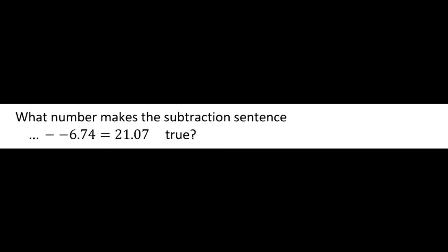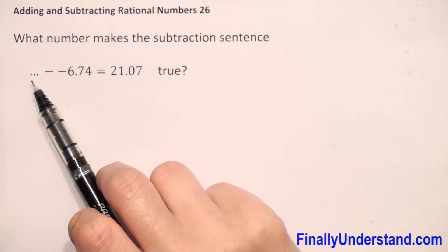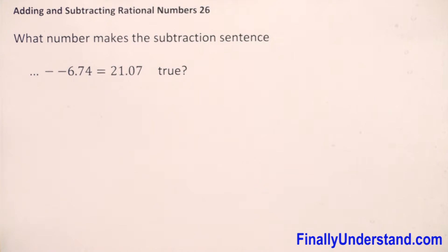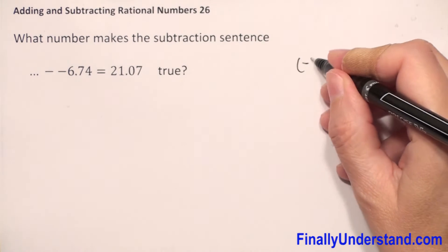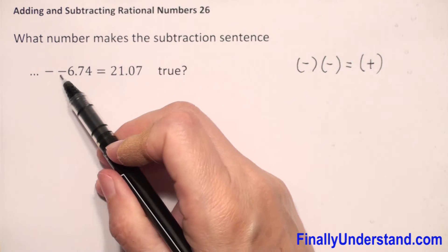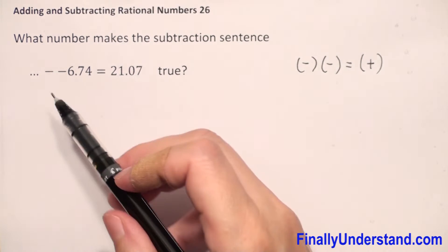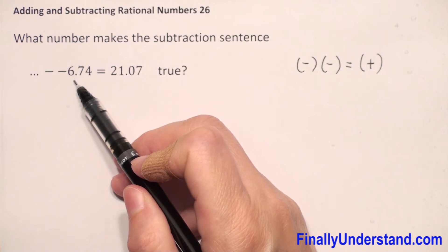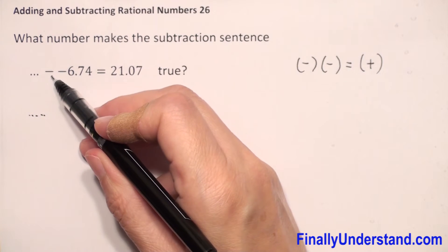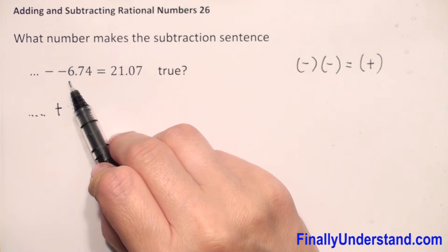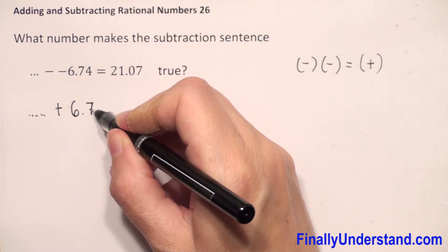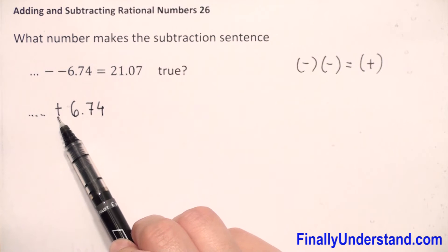What number makes the subtraction sentence true? We have something minus negative 6.74, and this equals 21.07. When we have two negative signs, the two negative signs make one positive sign. When we have subtraction of rational numbers and the second number is negative, we copy the first number and change subtraction to addition of its opposite. The opposite of negative 6.74 is 6.74.